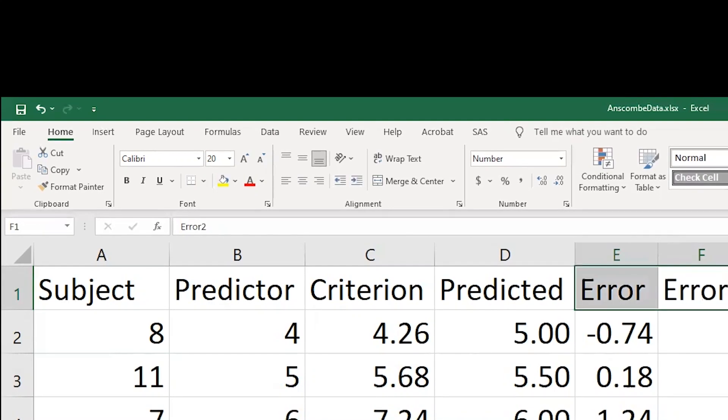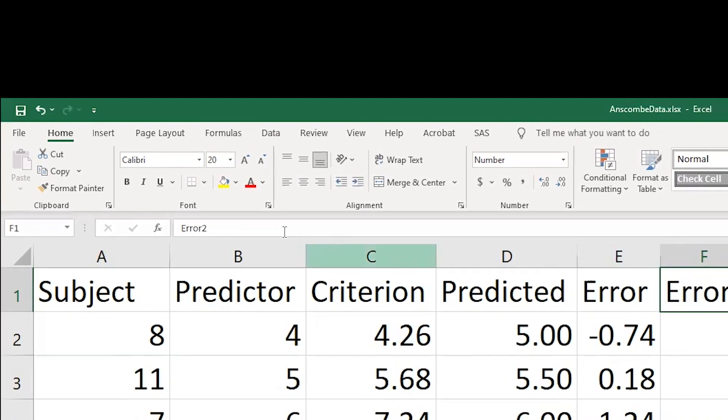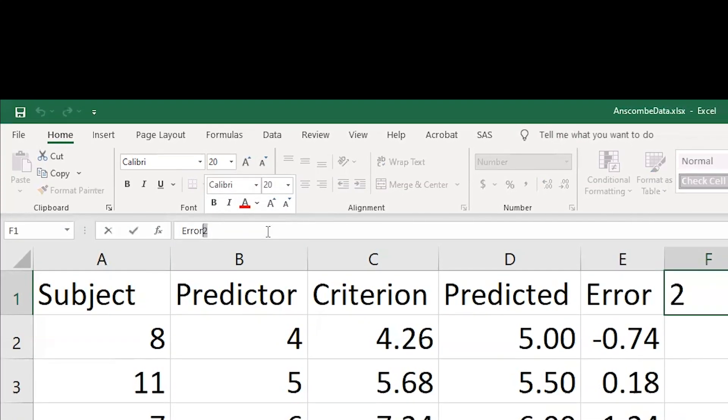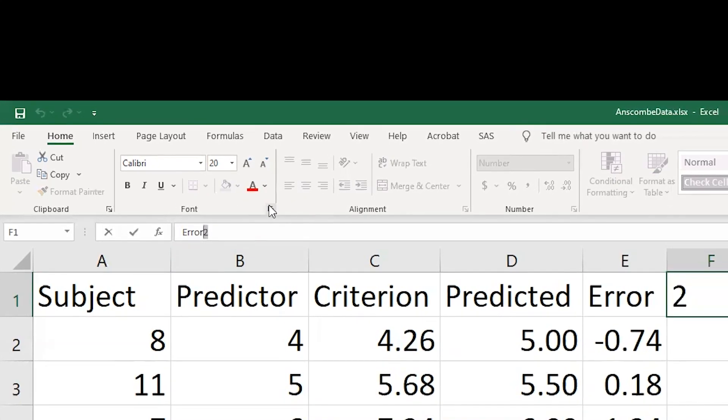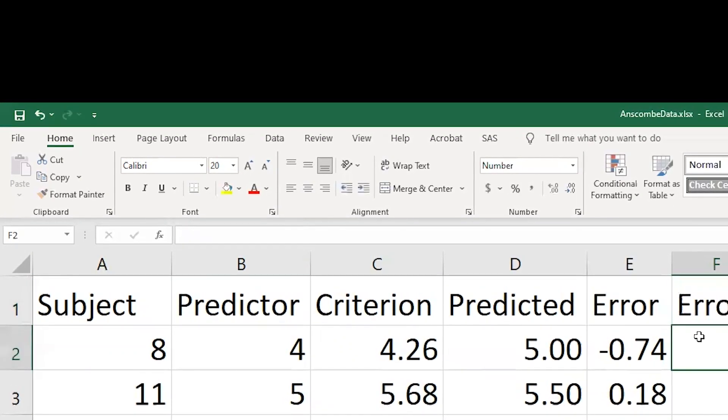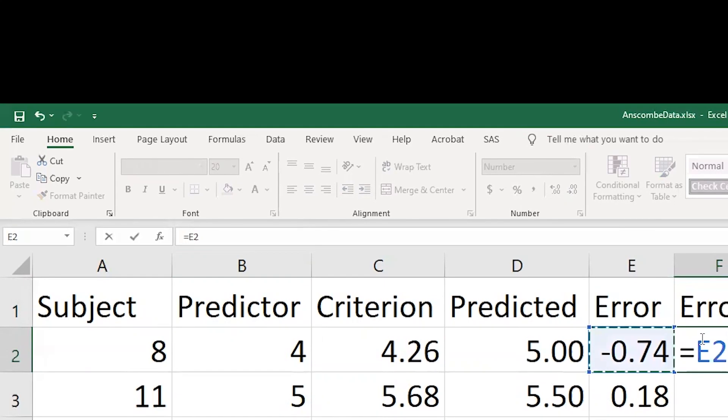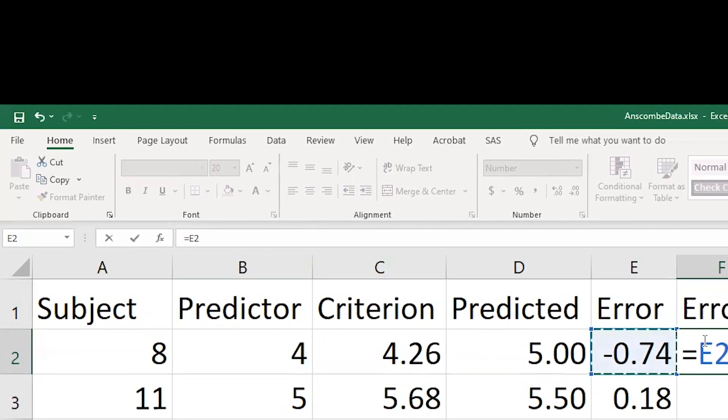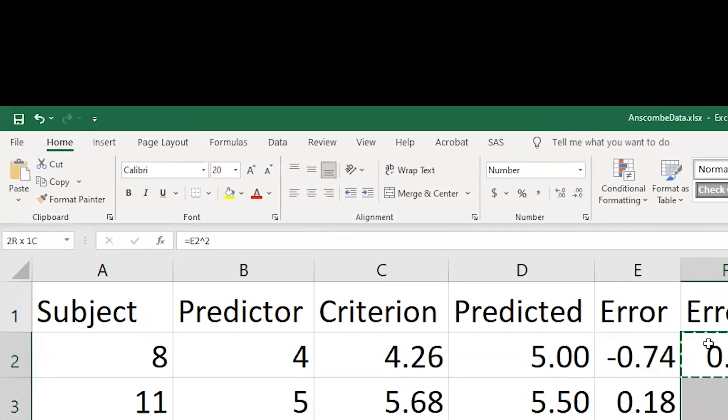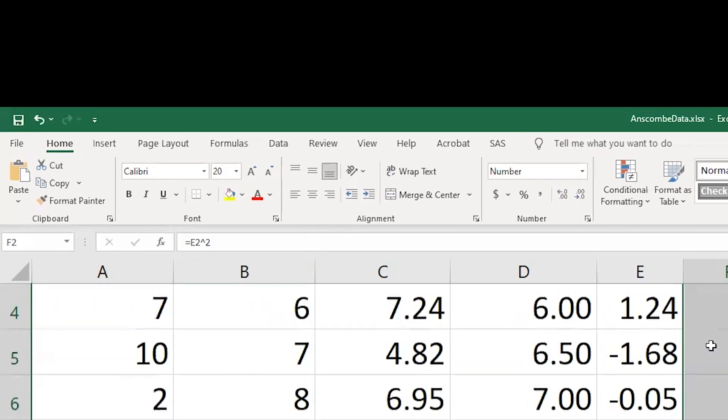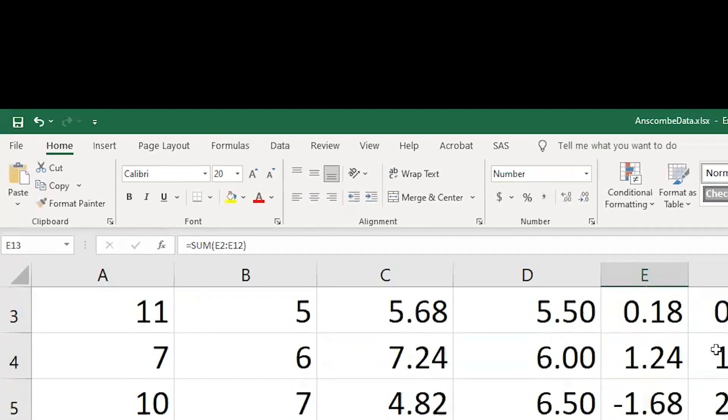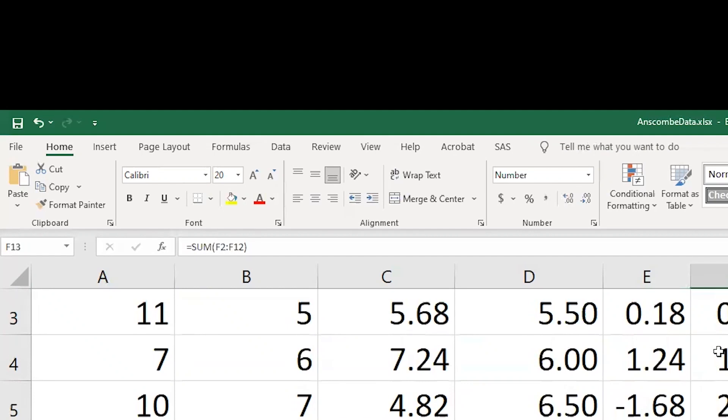And if I want to get fancy, I can come upstairs here and select number 2 and make it a superscript there. And if I want to square this value, I'm going to say take this value that's over here and shift six, the caret, 2 squares it. And I can copy all of that and come down here and paste it. Well, here are my squared errors of prediction. If I sum all of these squared errors of prediction, I get 13.76.